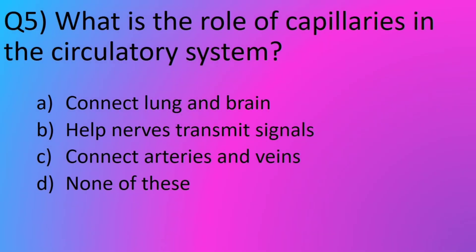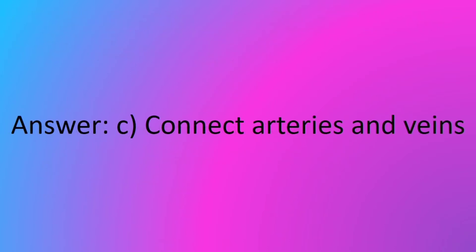Question No. 5: What is the role of capillaries in the circulatory system? Option A: Connect lung and brain. Option B: Help nerves transmit signals. Option C: Connect arteries and veins. Option D: None of these. The answer is Option C: Connect arteries and veins.